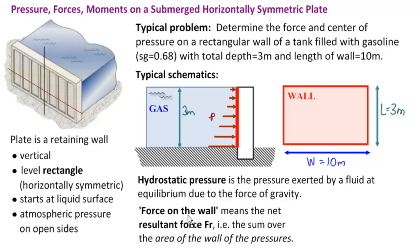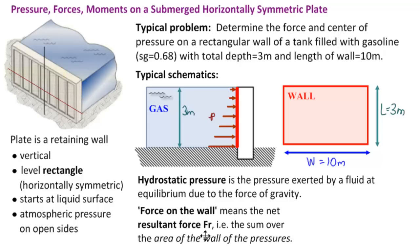And the force on the wall means the net resultant force. What does that mean? It means we're going to ignore atmospheric pressure here and atmospheric pressure here. What results is when we take away both atmospheric pressures, we just have the force on the wall. And it's the sum over the area of the wall, that's why we need this one, of the pressures.